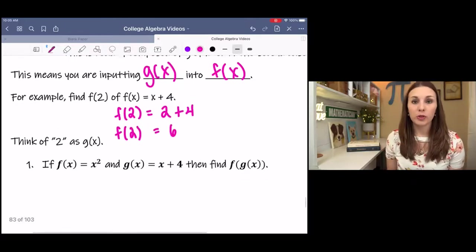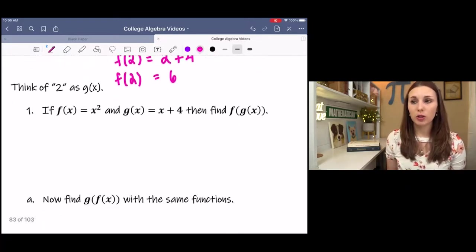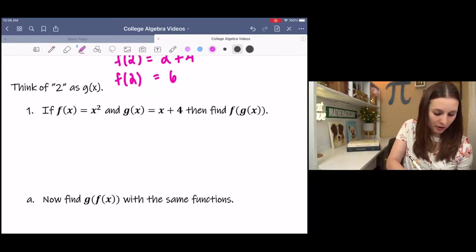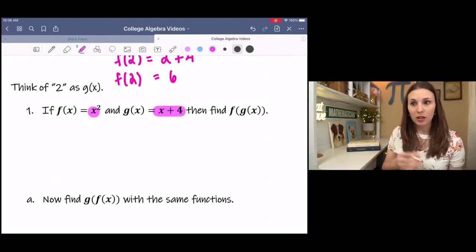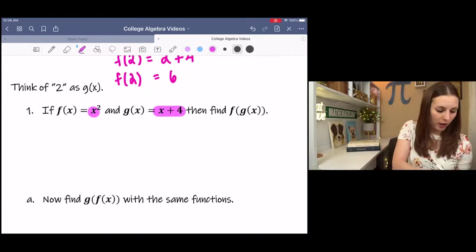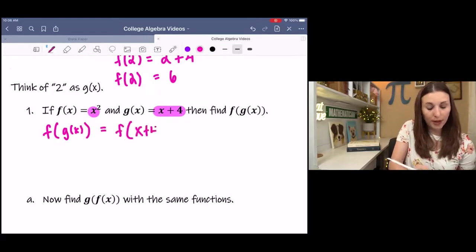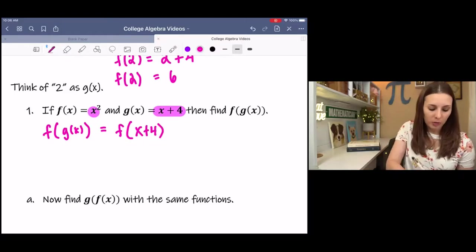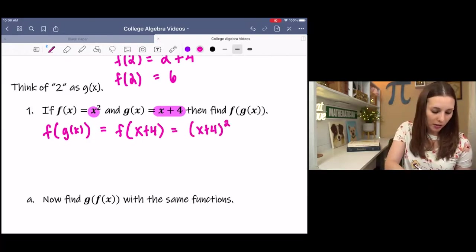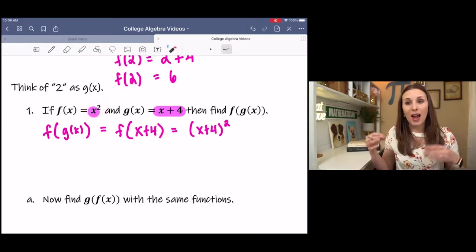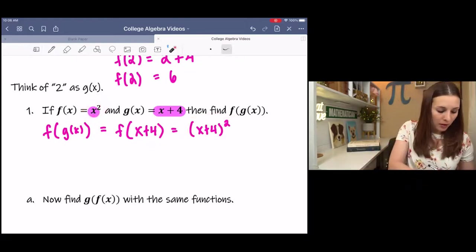We have an example here, f of x equals x squared and g of x equals x plus 4. We're finding f of g of x. So we're going to take g of x and we're going to plug it into x. g of x goes into f of x. So what we're finding is f of g of x means f of x plus 4 because g of x is x plus 4, which means in place of x, I'm going to be putting, substituting, x plus 4. Now f of x was x squared, so that's why I have x plus 4 squared because now x is x plus 4.